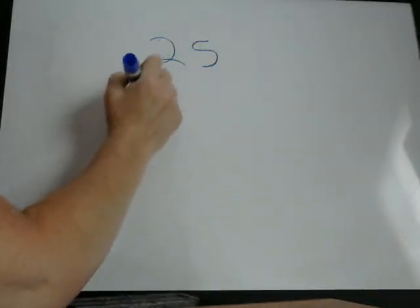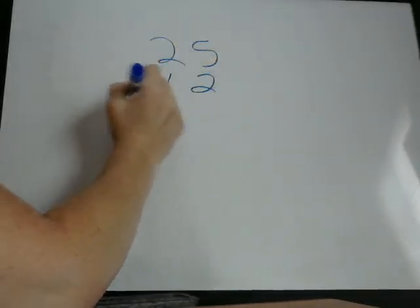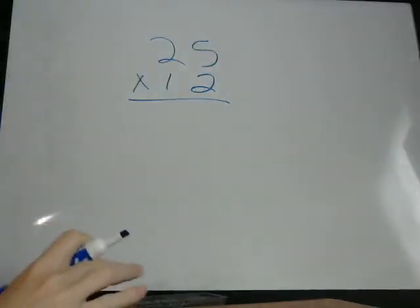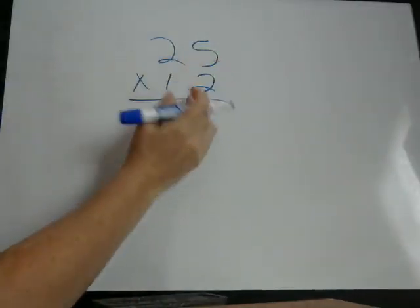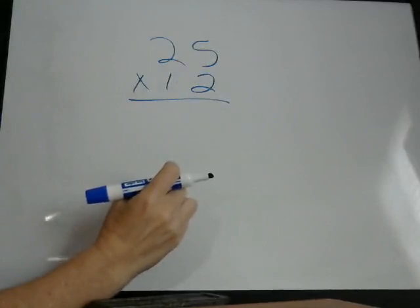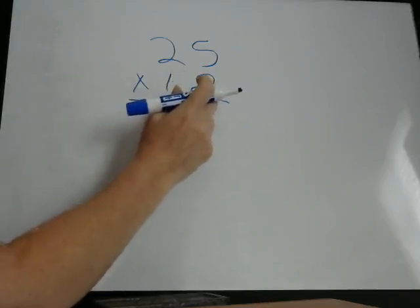Now I'm going to show you how to do some multiplication problems. For example, 25 times 12. The way we do this is we just start on the right hand side with the lower digit, the lower number, and we're just going to multiply each digit by each digit. So we have,